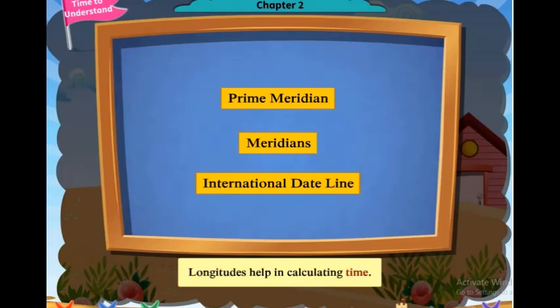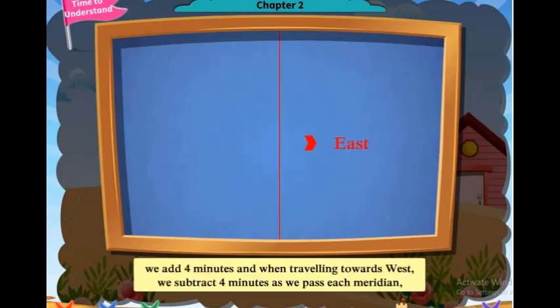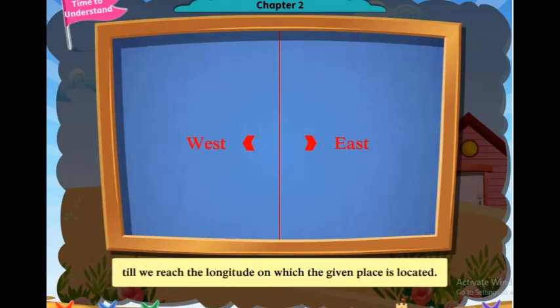Longitudes help in calculating time. When we travel towards the east from the prime meridian, we add 4 minutes, and when travelling towards the west, we subtract 4 minutes, as we pass each meridian, until we reach the longitude on which the given place is located.